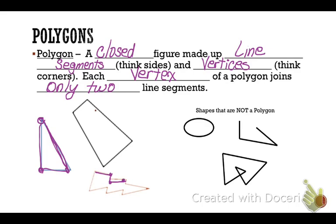It's a closed figure. On the right, we have shapes that are not polygons — like circles, ovals, or shapes that are not closed up. And this last shape is not a polygon because this vertex here joins more than two line segments.